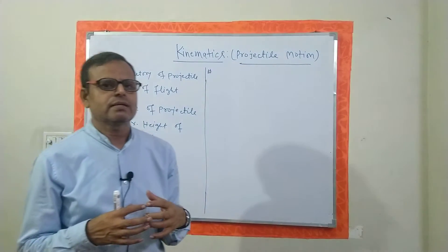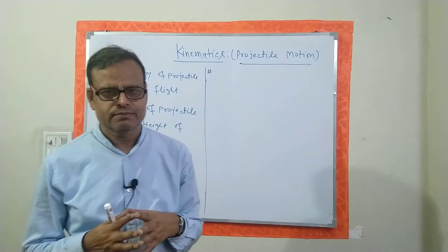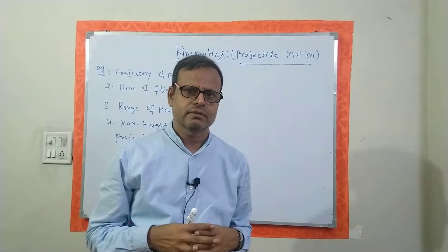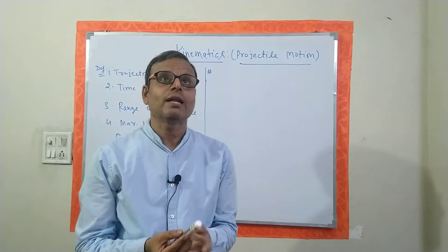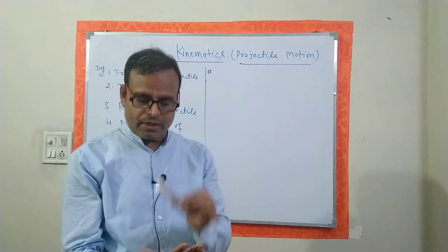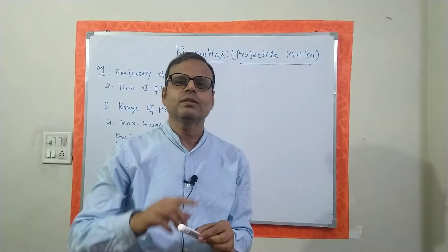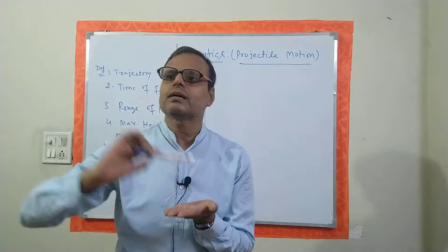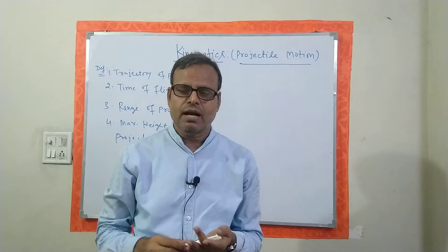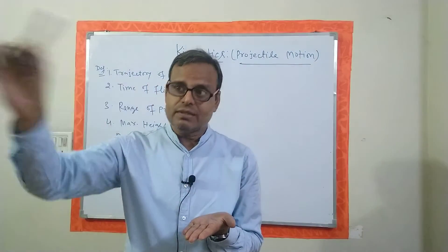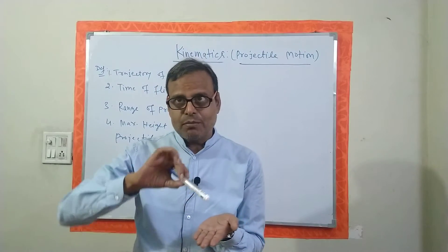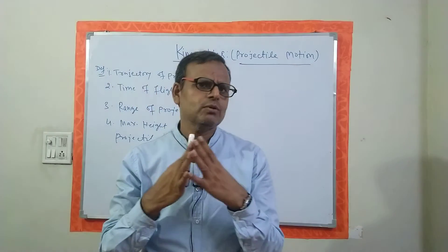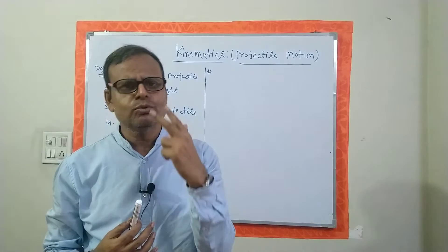Today I would like to discuss projectile motion. A projectile is an object which is thrown in any direction other than vertical. If you throw along vertical only, the particle will come back to the same point, so it will not be called a projectile. But when we throw it at an angle, it will cover a range, a distance, and there will be a time to cover this distance and a maximum height from horizontal.